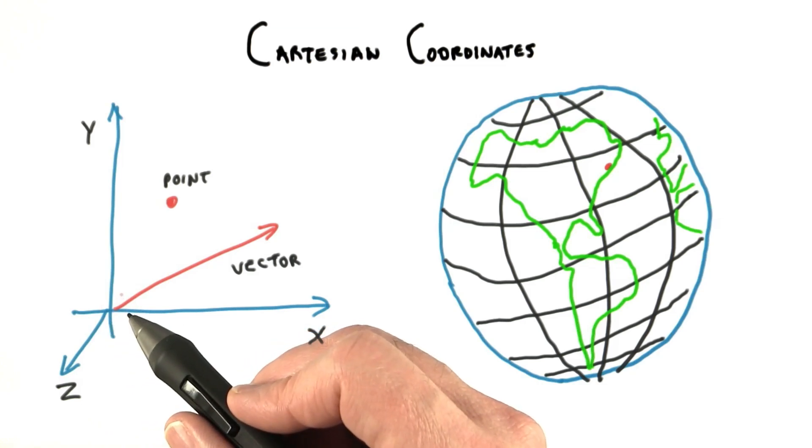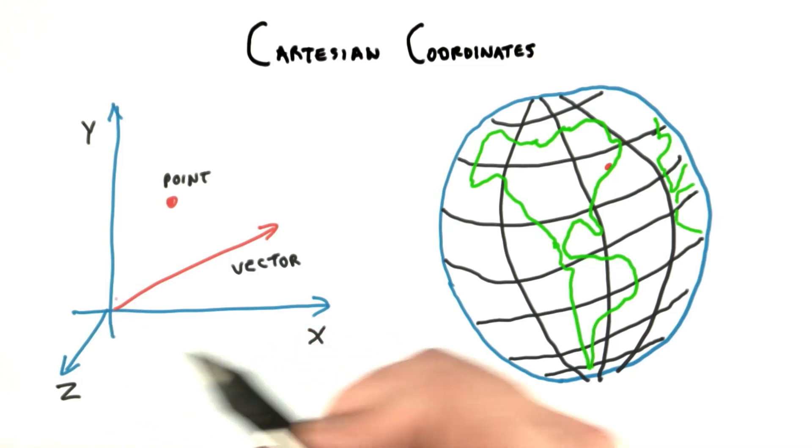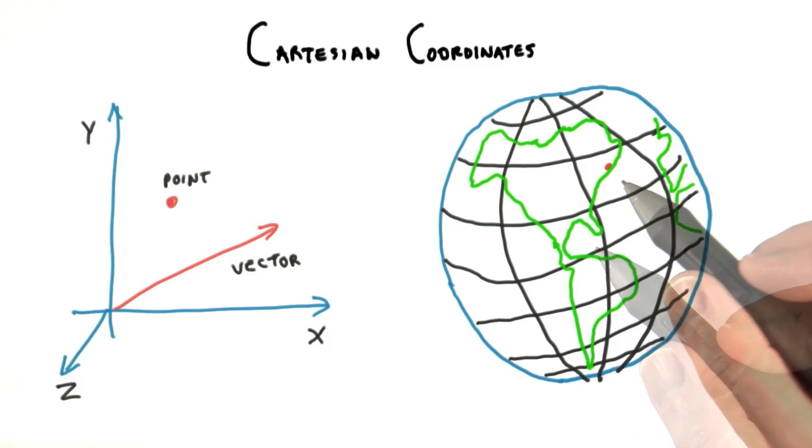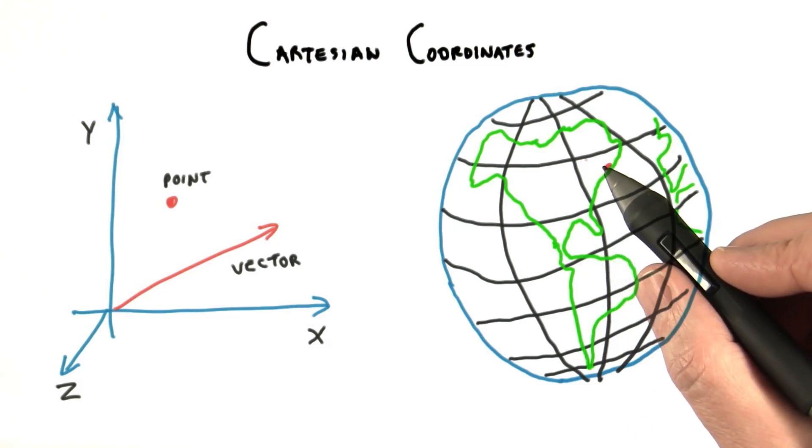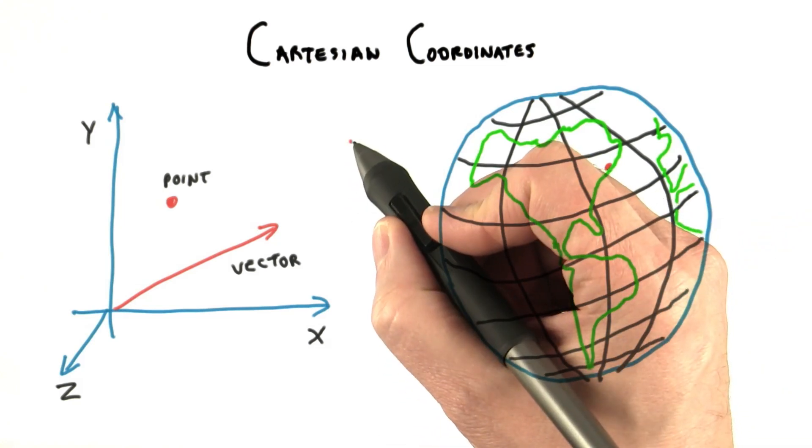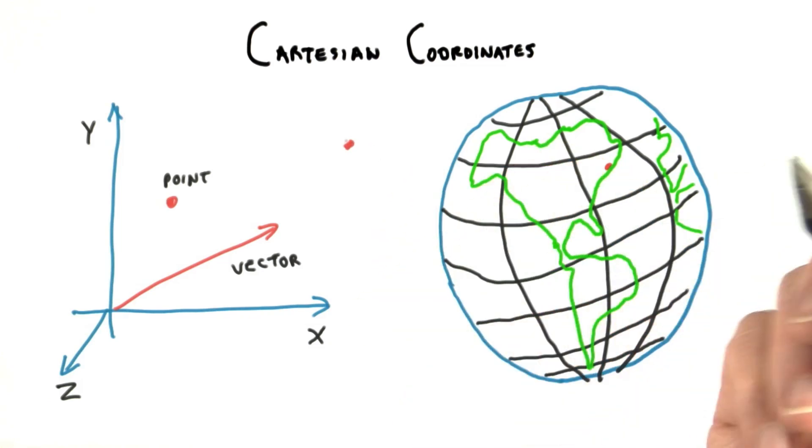The origin is some fixed point in space whose location everyone agrees on. This point could be anything. I could build a world based on the location of a surveyor's marker, a dot drawn on a tablet, or a reference point I simply imagine.